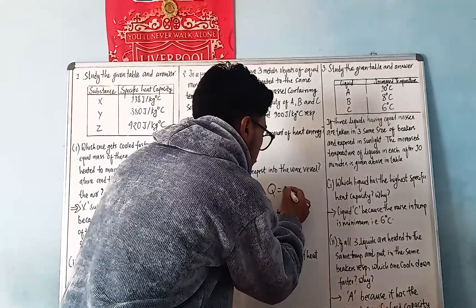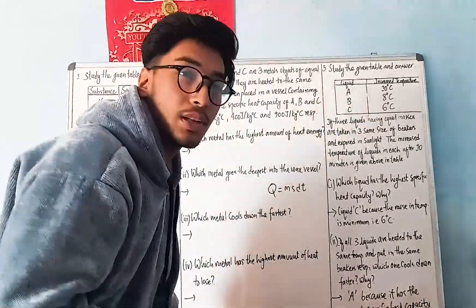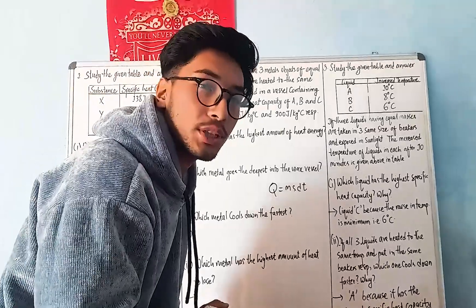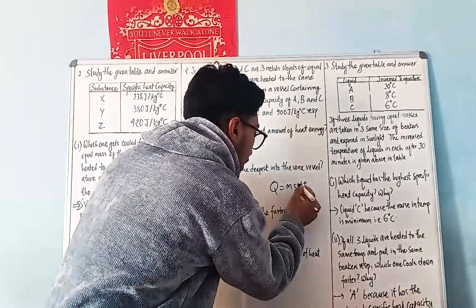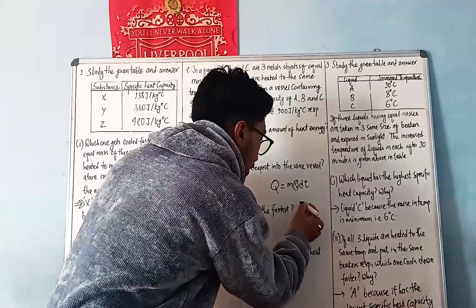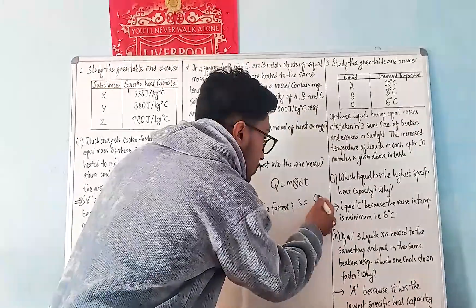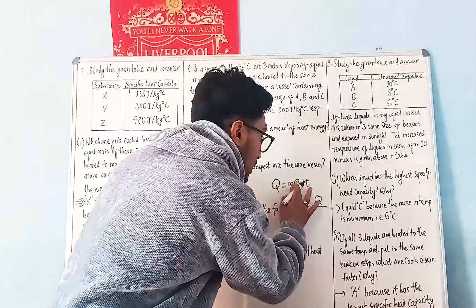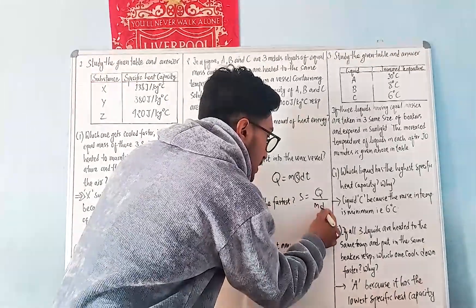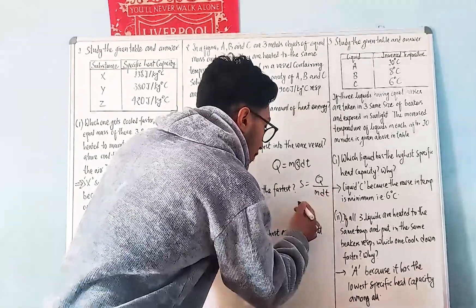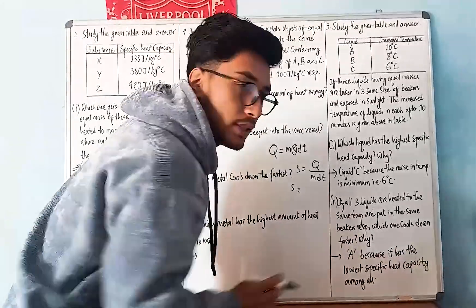Q equals m times S times dT. We have to use this heat equation. This is the heat energy formula we will work with.